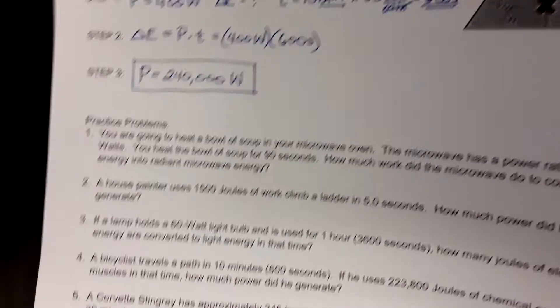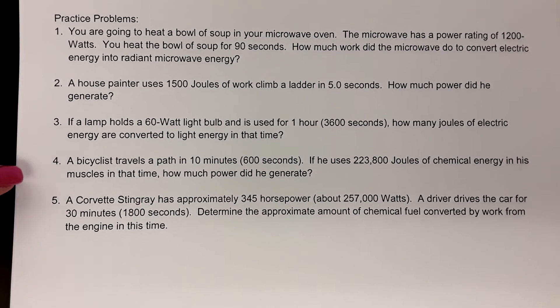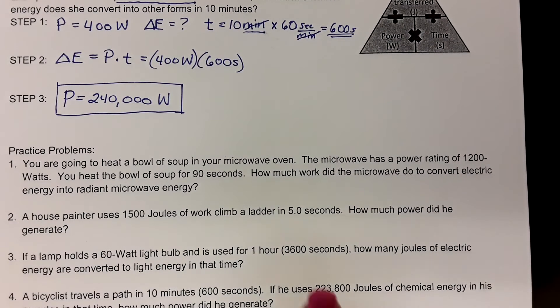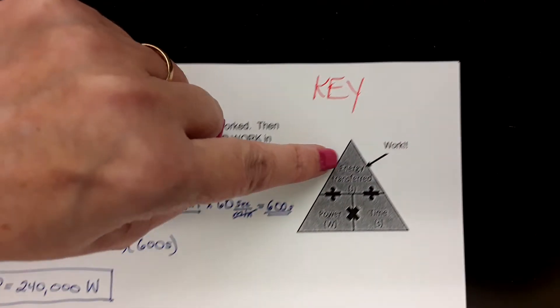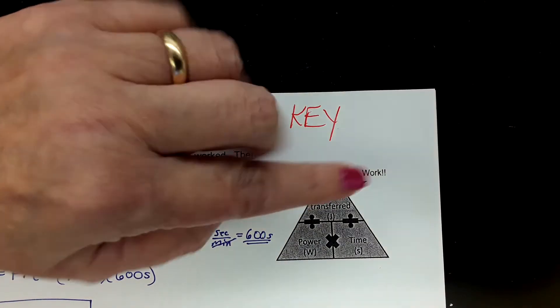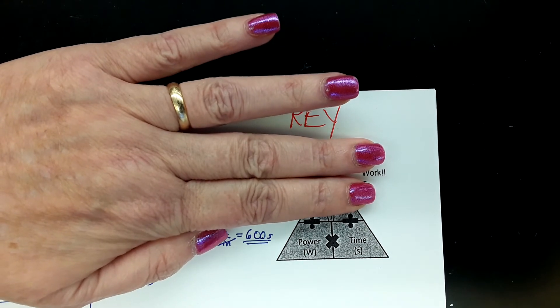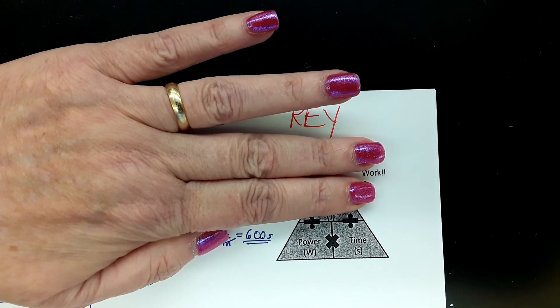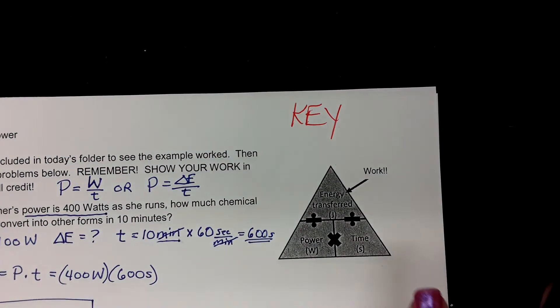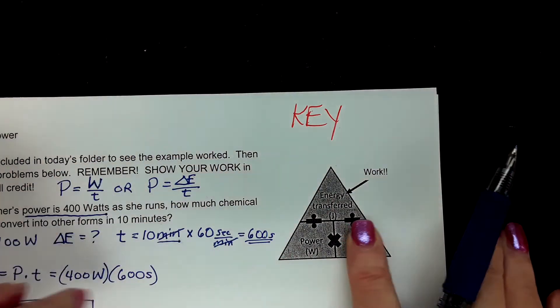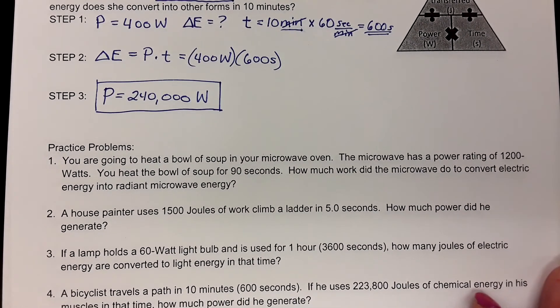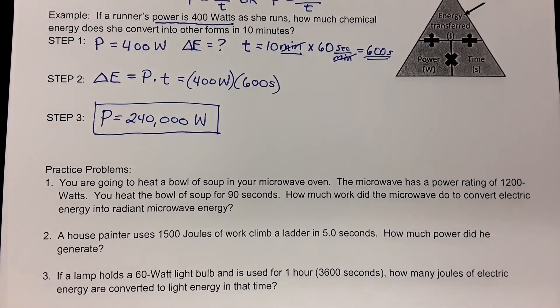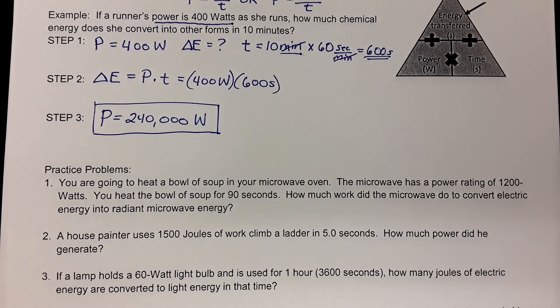All right. Now, what I want you guys to do is to try doing the ones right down here using the same method. Remember, depending on what they're trying to have you find, like here, they want how much work did the microwave do? The work is the energy transferred. So cover that up. You're going to say P times T, just like we did on the example. You get the idea? So whatever you're looking for, cover it up, and it'll tell you what to do with the other two. So identification is very important here of the information that you're given. All right, guys. Go ahead and have fun with this. Submit it, and I'll see you later. Bye-bye.